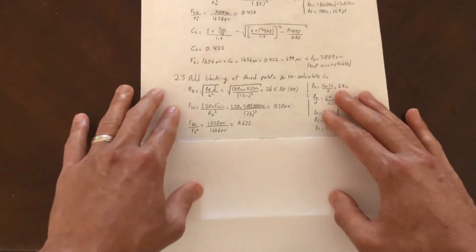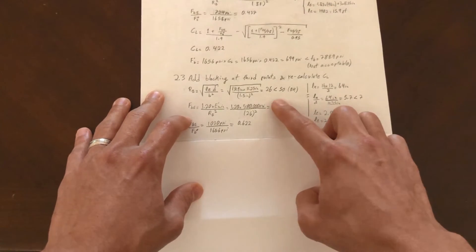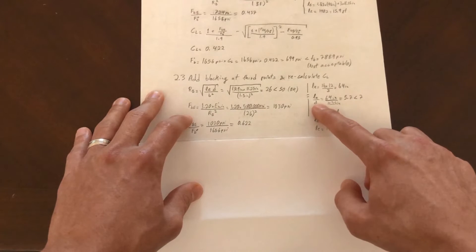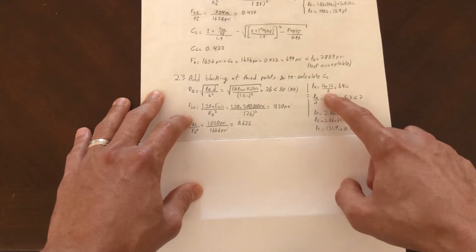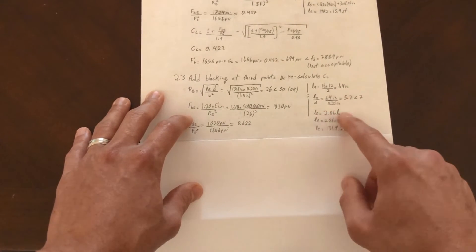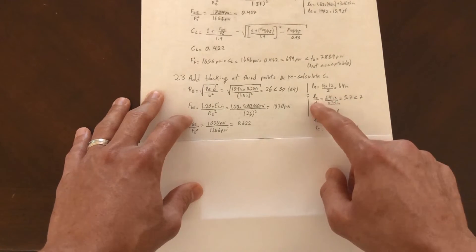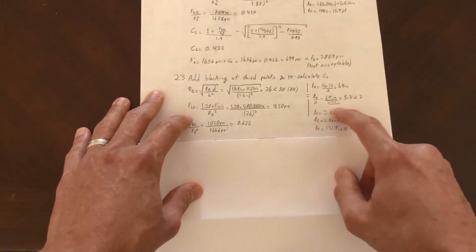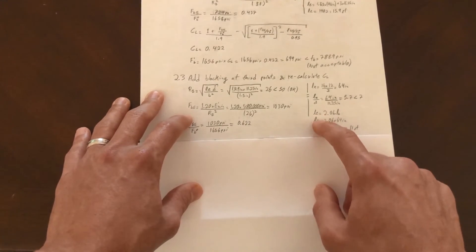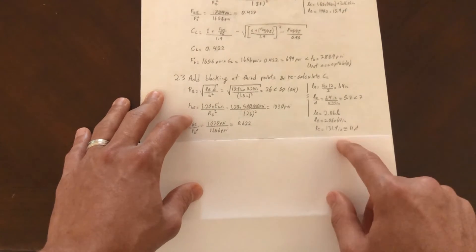As we can see here, our slenderness ratio decreased even further. Now our LU over D, since LU is 16 feet divided by 3, which equals 64 inches, we are actually less than seven with this LU over D ratio. So we used here the other formula for the effective length, and that gives us an effective length of about 11 feet, so it's a lot less.